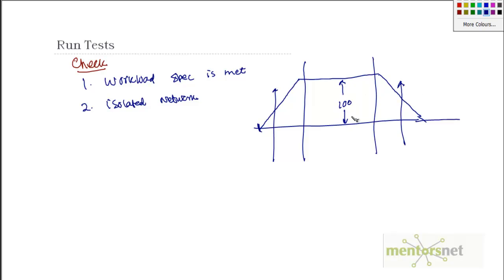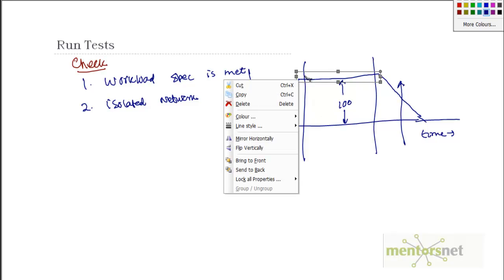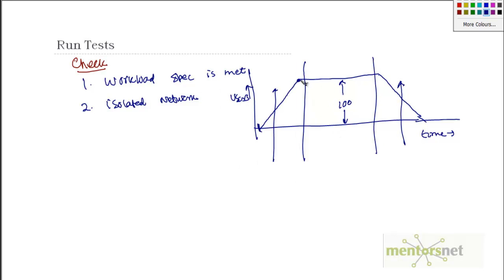On this chart, the X-axis is time and the Y-axis is users. At the steady state interval all 100 users are running. At the end of the time period all 100 users are doing something. A lot of people make the mistake of not simulating ramp up and ramp down time, so ensure you simulate both ramp up and ramp down.